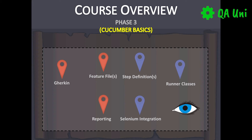The final phase is phase three. We're going to be looking at all the key components of Cucumber. We're going to look at the Gherkin language and create a feature file. We're then going to link that feature file with a specific step definition class. And then finally, we're going to create a runner class, which will enable us to develop advanced reports and attach exception images into our reports.